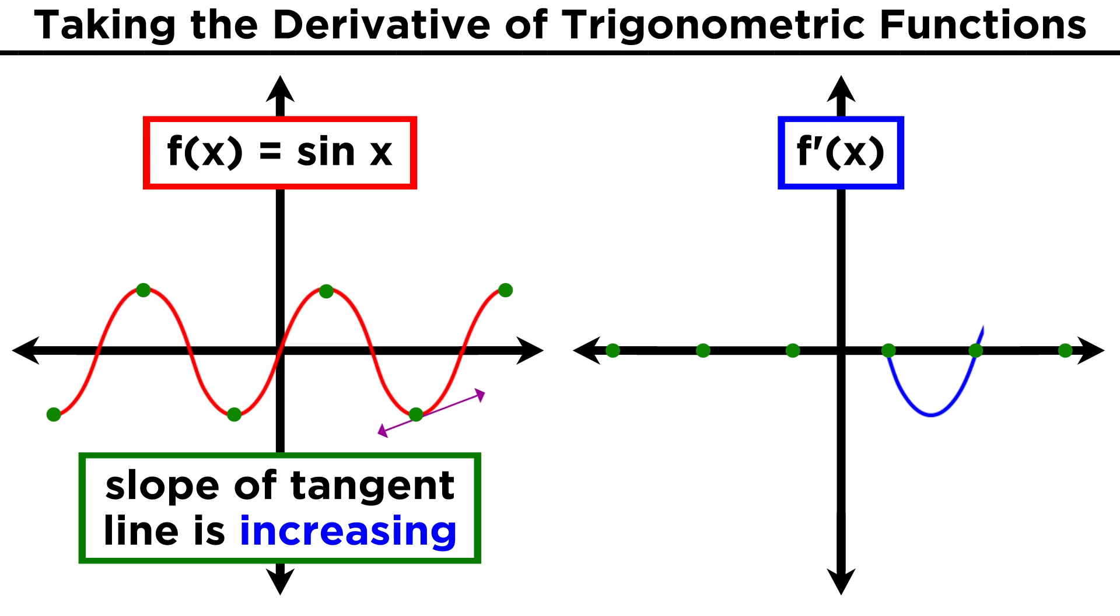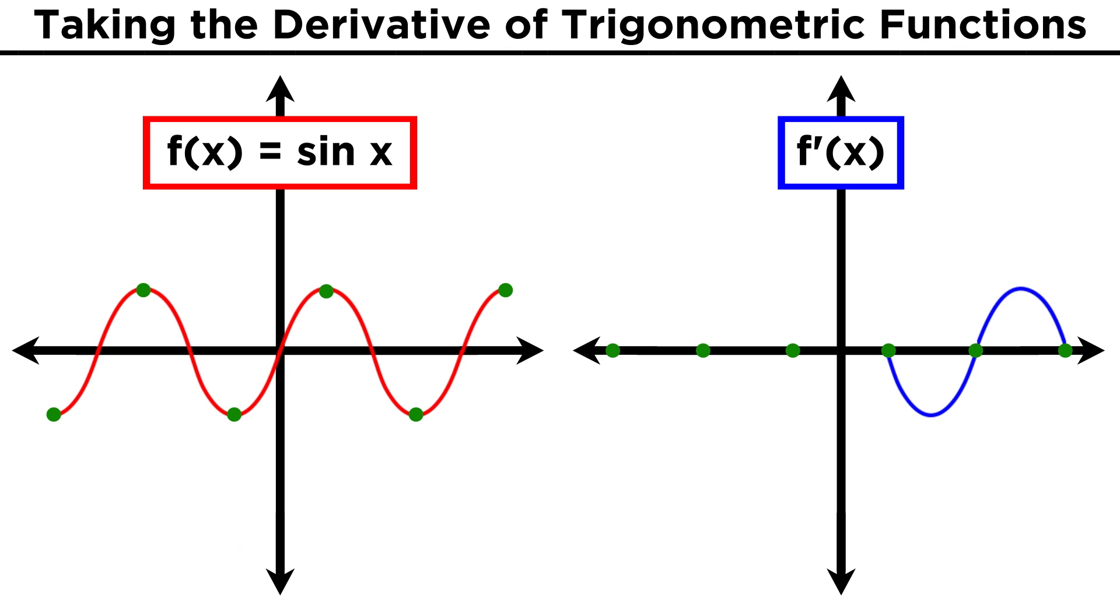Then the slope of sine x will have to increase until it hits one, but then decrease until it gets back to zero at the next local maximum. So the derivative should look like this for that section. This pattern will repeat infinitely in either direction, so the derivative of sine x looks like this.